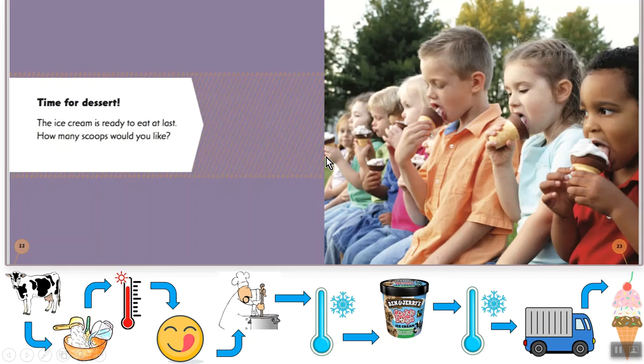And the last step. It's time for dessert. The ice cream is ready to eat at last. How many scoops would you like? So our full sequence looks like this: we got milk from cows, we added sugar, we heated up the mixture, we added yummy flavors to the mixture, we stirred the mixture, we cooled it down, we transferred the mixture into buckets, we cooled it down again, we put it on a truck and it got delivered so that people could eat the yummy ice cream.